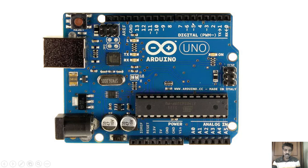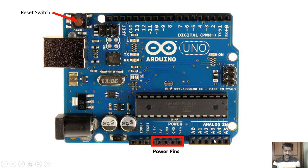Now let us see the different pins on the Arduino board. Here is the reset button, through which we can reset the microcontroller. Suppose we have used the microcontroller for one project and uploaded certain software; for another project we can reset it and upload a different program. Here you can see the power pins: a 3.3 volt supply, a 5 volt supply, two ground pins, and one VIN pin where you can also supply 7 to 12 volts.